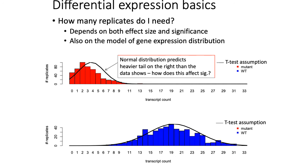Generally speaking, the larger the effect size of a mutation, the fewer replicates you need to detect that difference. Effect size is a calculation of the log ratio of the mean of one curve versus the other. The reason you need replicates is that within each group — either the red or blue — there's a lot of variation between samples. The width of those curves indicates how much variability there is within a group. The role of replicates is to give you an estimate of how wide those curves are, so you can estimate the overlap and the difference in means.